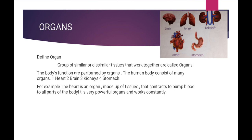The human body consists of many organs: number one heart, number two brain, number three kidneys, number four stomach. Taking the heart as an example: the heart is an organ made of tissues that contract to pump blood to all parts of the body. It is a very powerful organ and works constantly – yeh mustaqil kaam karta hai.